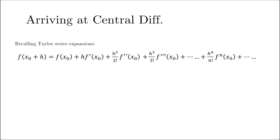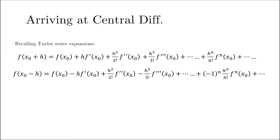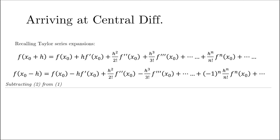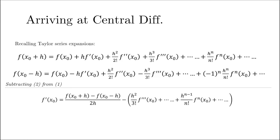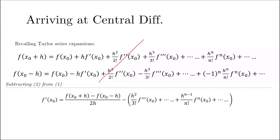We take the two Taylor series expansions written for x0 plus h and x0 minus h. The task is to get f'(x0) with a higher truncation order. We can subtract the second equation from the first, and we see that f'(x0) can now be written in a particular fashion where some terms cancel out. The first term inside the bracket has a leading order factor multiplied by h squared.